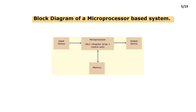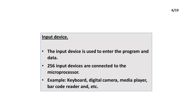A block diagram of a microprocessor based system is shown. The input device is used to enter the program and data. Up to 256 input devices can be connected to the microprocessor. Examples include keyboard, digital camera, media player, barcode reader, and more.